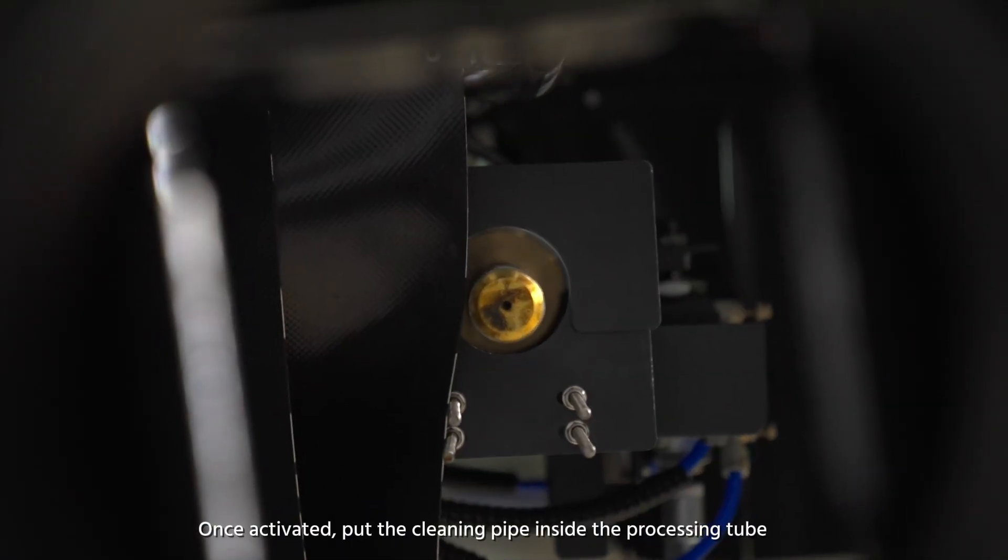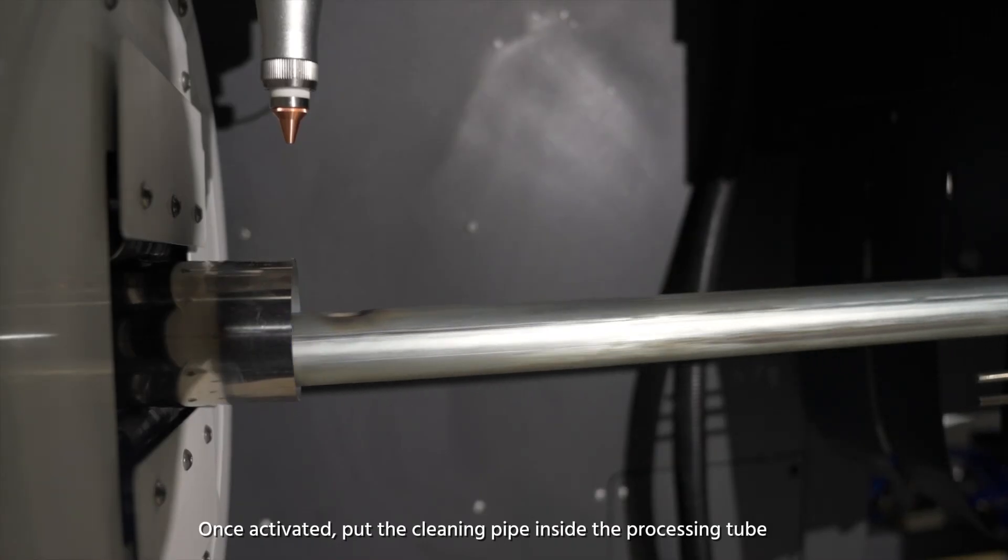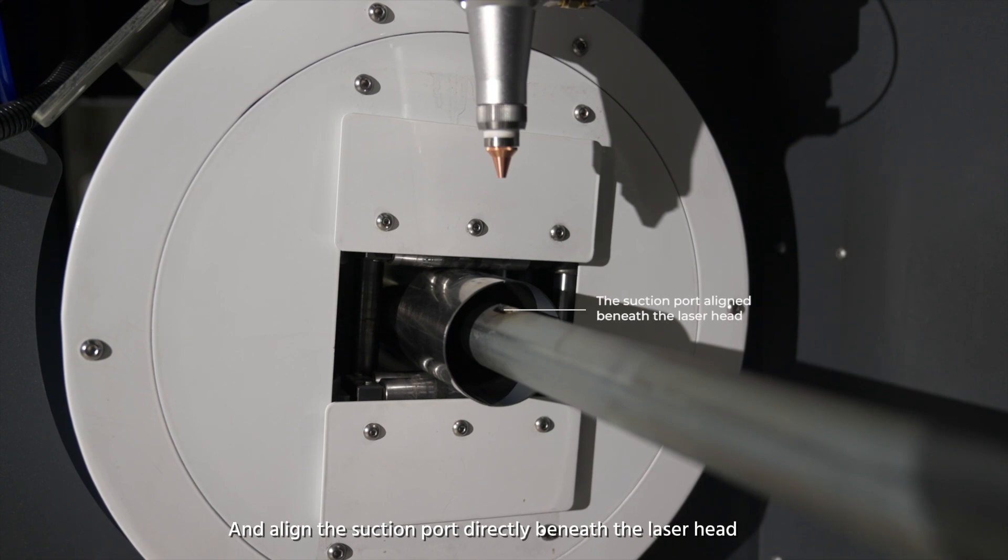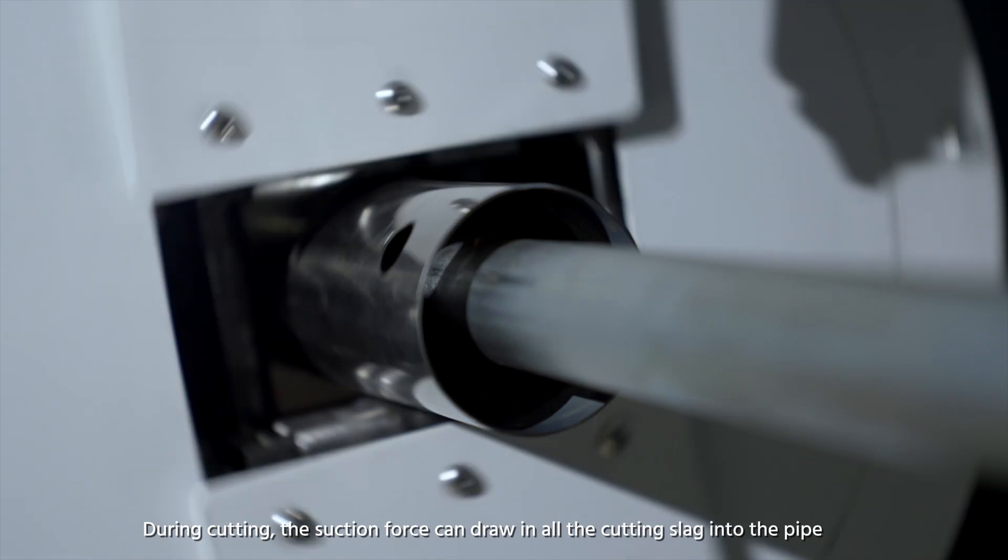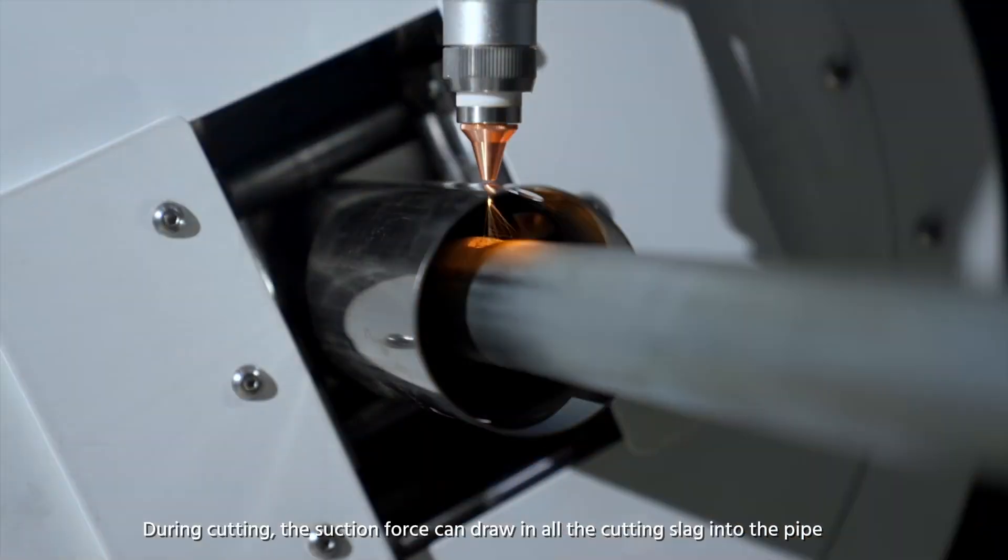Once activated, put the cleaning pipe inside the processing tube and align the suction port directly beneath the laser head. During cutting, the suction force can draw in all the cutting slag into the pipe.